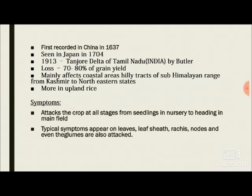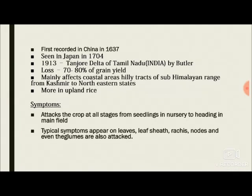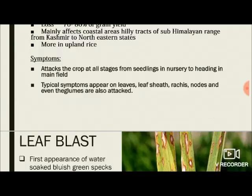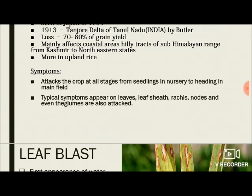There are certain kinds of rice which we grow: the upland rice, the medium land rice, the irrigated rice, or the low land rice. This disease has been reported more in the upland rice. Regarding generalized symptoms, the disease mainly attacks the crop at all stages — from seedlings in nursery to heading in the main field — and can occur at any stage of the crop.